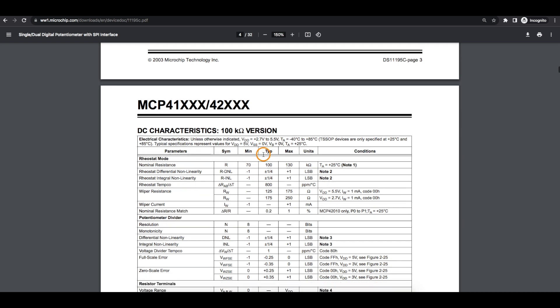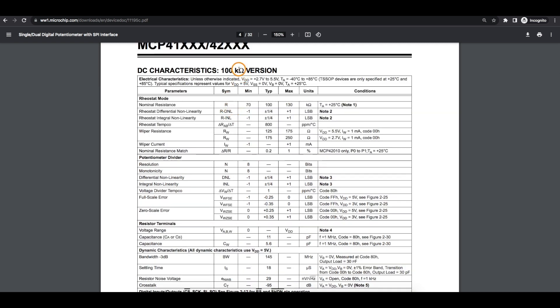Looking at the specs for the 100k version of the pot, with the tolerance on it, it can actually range between 70k and 130k. The one that I was testing with measured around 110k. And we can't just get down to a straight short circuit from the wiper to one of the pot terminals. There's going to be some wiper resistance, a few hundred ohms maybe.